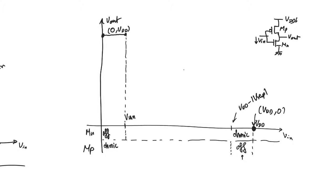The question is, when the NMOS turns on at V-threshold-N, does it turn on in saturation or in the ohmic regime? We know that the NMOS will eventually end up ohmic at V-input equals VDD. But does it go from cutoff to saturation to ohmic, or from cutoff directly to ohmic? The answer is it will go from cutoff to saturation and then to ohmic. The VTC is continuous, so it will start at the point (V-threshold-N, VDD) and drop. The NMOS sees a very high drain voltage because Vout starts at VDD, and with a small gate voltage it is definitely saturated. So it turns on in saturation first.